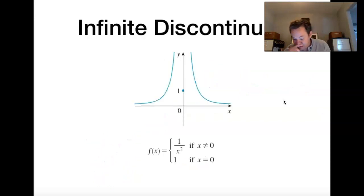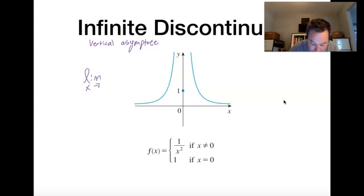An infinite discontinuity happens when we have a vertical asymptote of any type. So, a vertical asymptote will occur when you're approaching a limiting value from the left or the right, and your function approaches positive or negative infinity. So, any kind of a function that has a vertical asymptote at any point, that's called an infinite.